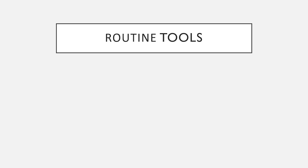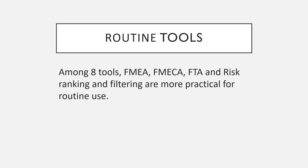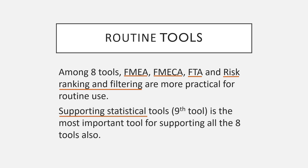Let us see how the quality risk management tools work. Among eight routine tools, FMEA, FMECA, FTA, and risk ranking and filtering are more practical for routine use. Additionally, statistical tools form the ninth tool, which is the most important for supporting all eight tools. So out of nine total tools, FMEA, FMECA, FTA, and risk ranking and filtering are very useful for routine risk management assessment.